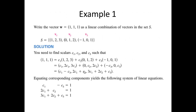Let us start with a very simple example. Let W be the vector with entries 1, 1, 1 — that's a vector in R3. And let S be the set given by V1, V2, V3. Can we write W as a linear combination of the vectors in S? The procedure is to set W equals C1·V1 plus C2·V2 plus C3·V3.